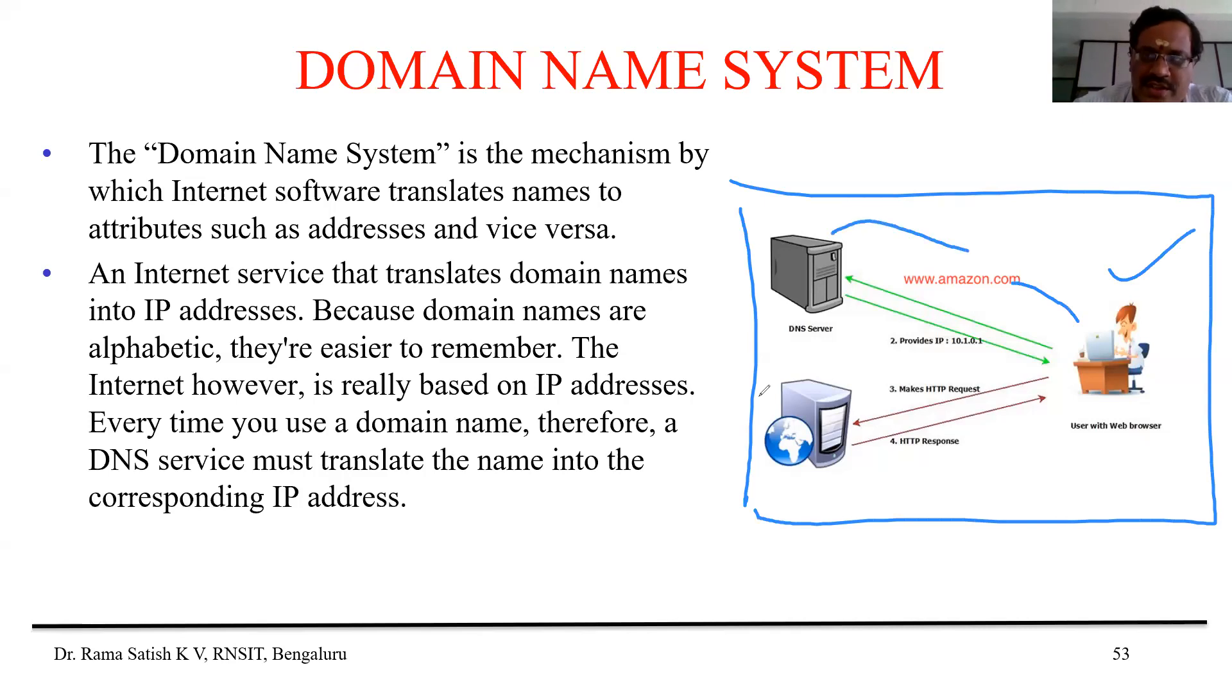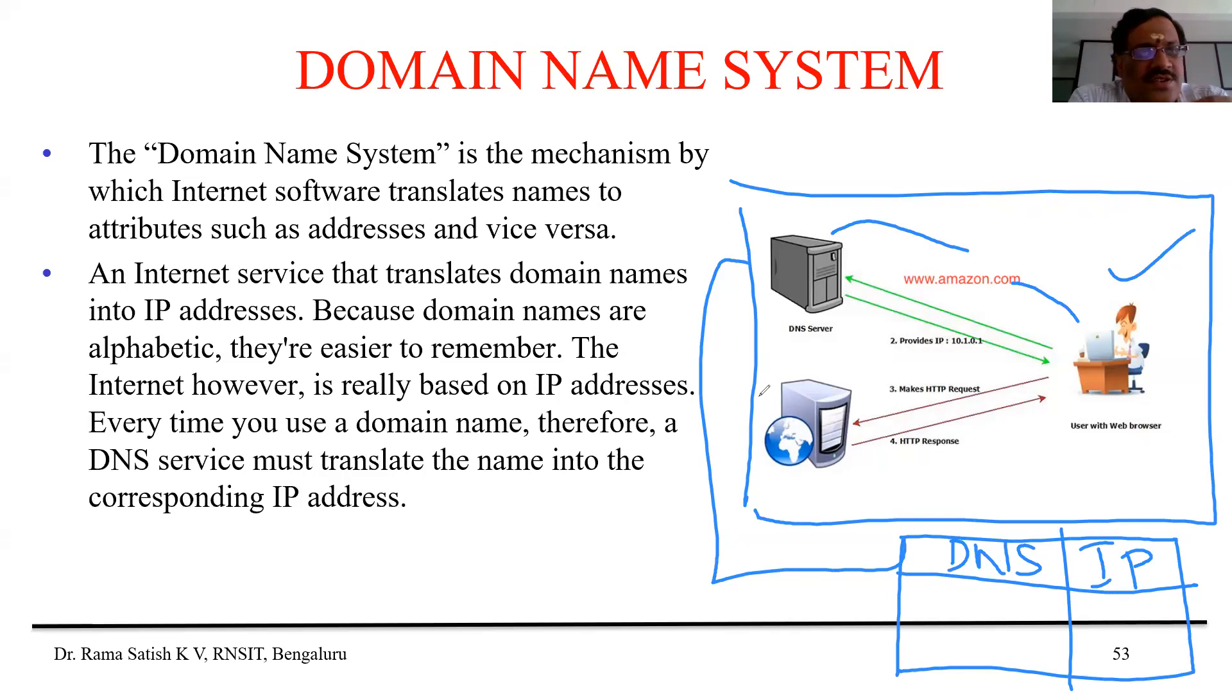A user is typing amazon.com. Amazon.com goes to the server, the DNS server. In the server, there is a table maintained. Each entry of the table will have DNS and its respective IP address. You can ask me, why do we need DNS? Why can't we directly give IP address only?